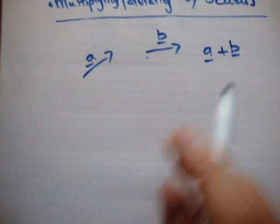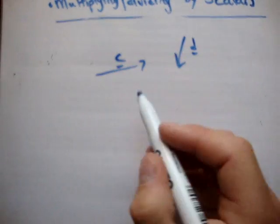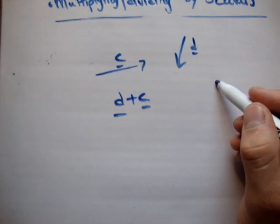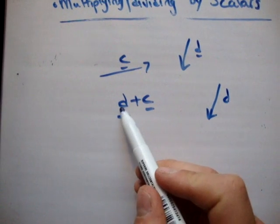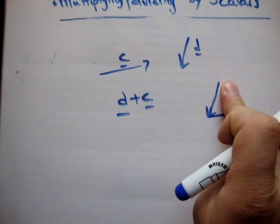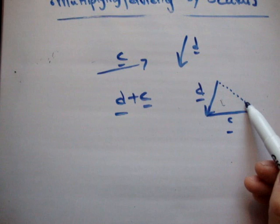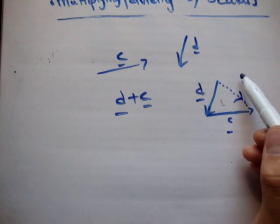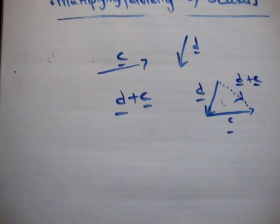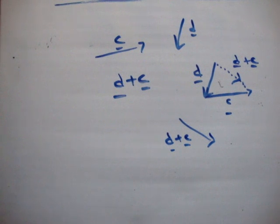Let's do another one. Say this is c and that's d. If I want d plus c: draw d first, then put the tail of the second vector on the head of the first. Draw from the tail of the first to the head of the second to get your resultant vector, which in this case is d plus c. That means the two vectors d and c together are equivalent to a single vector going in this direction, called d plus c. Very simple.